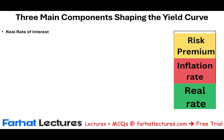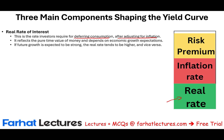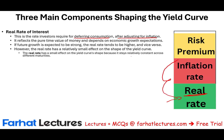The first component is the real rate. When an interest rate is quoted, the lender wants to earn a real rate — this is the rate the investor requires for deferring consumption, adjusted for inflation. It reflects the pure time value of money and depends on economic growth expectations. This real rate has a relatively small effect on the shape of the yield curve because it stays relatively constant across different maturities. If an investor requires an 8% real return, they always require 8%.